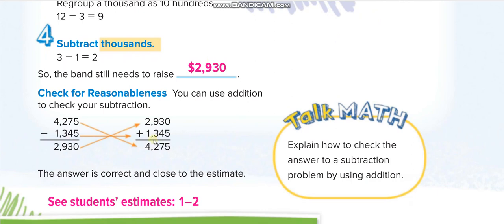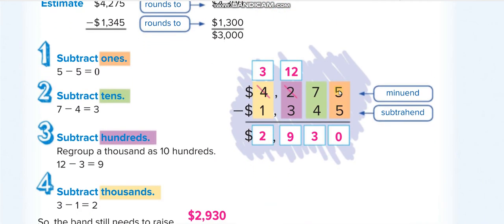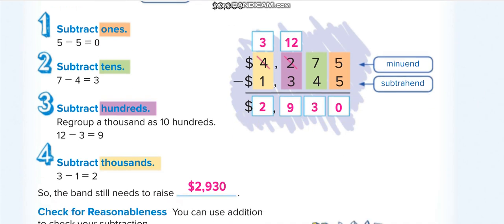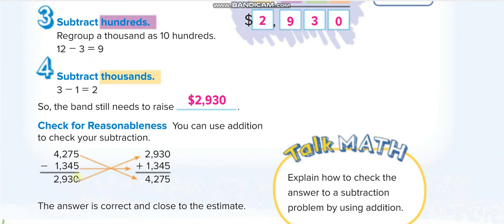Here they told you how we can check our answer. The number from which we minus is known as minuend, and the number which we minus is known as subtrahend, and the answer of subtraction is known as difference. So, write the difference here, then the subtrahend, and add them. If you get the minuend, it means your answer is correct.